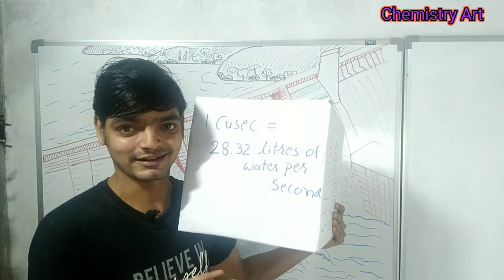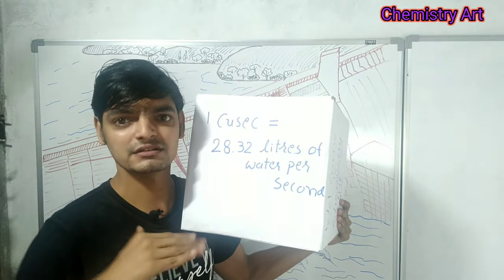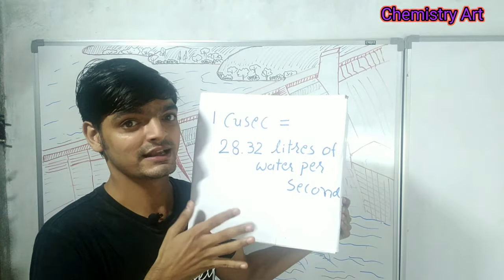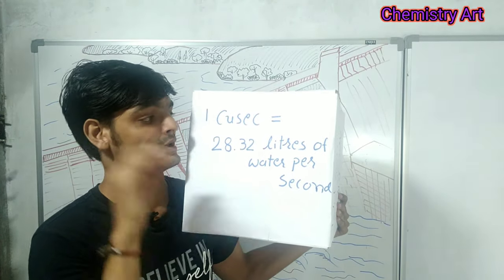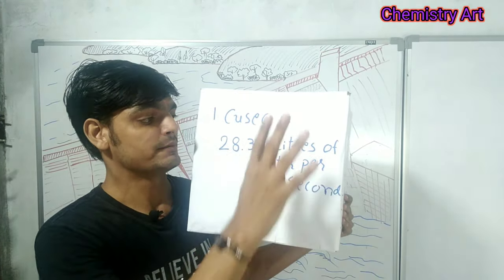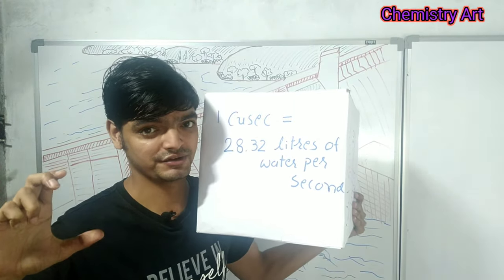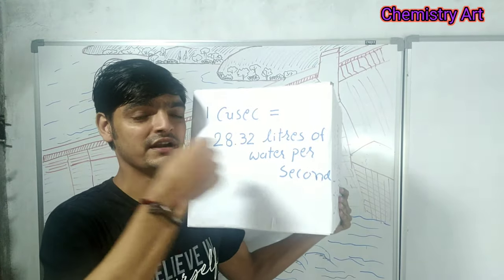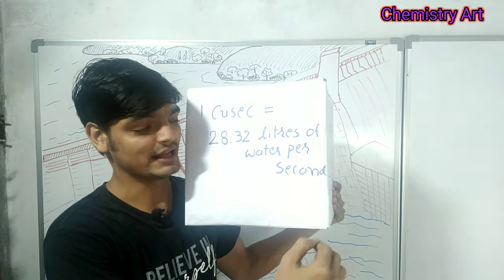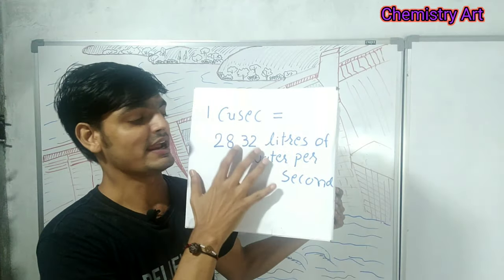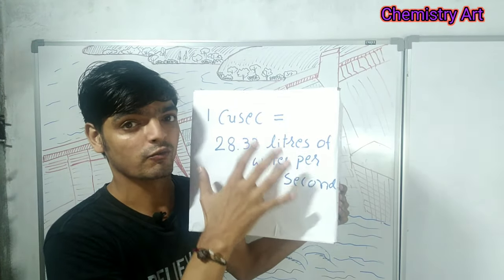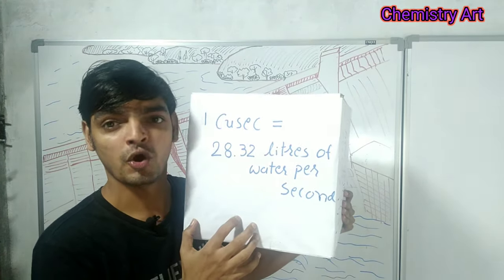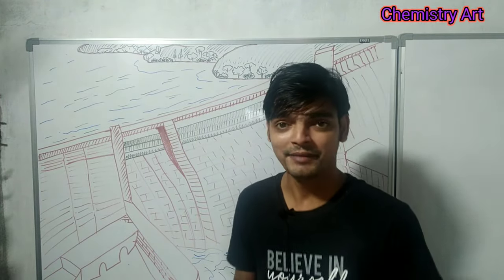To understand this, you can prepare a glass cube and try to fill exactly 28.32 liters of water. Use a one-liter measurement and add water one liter at a time — you will see that exactly 28.32 liters can be filled in this cube.